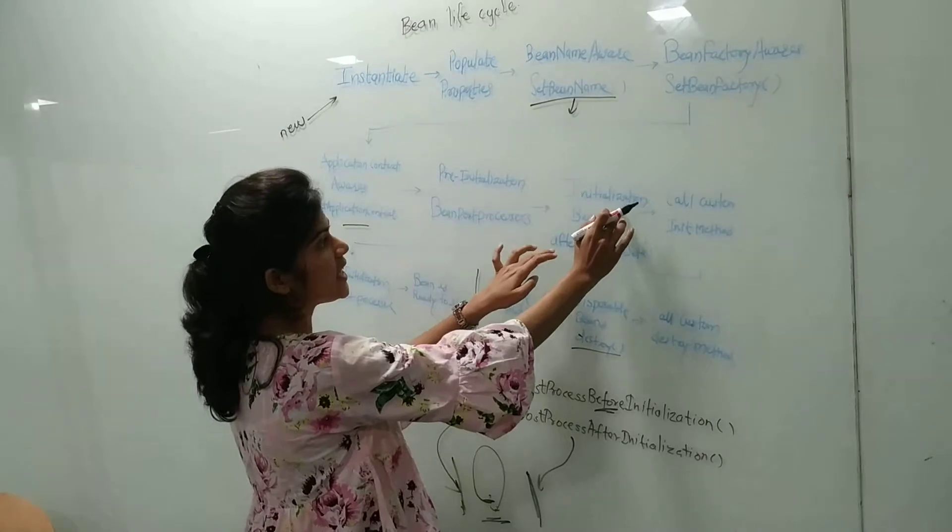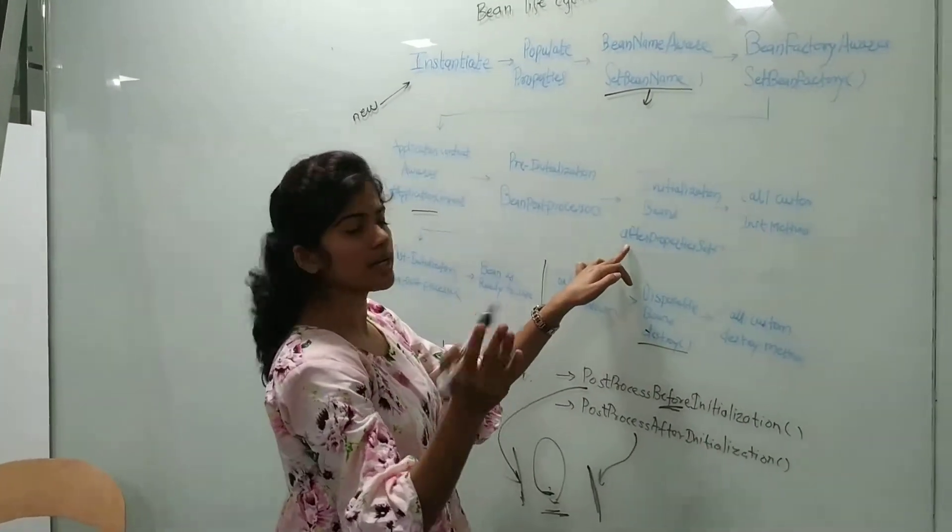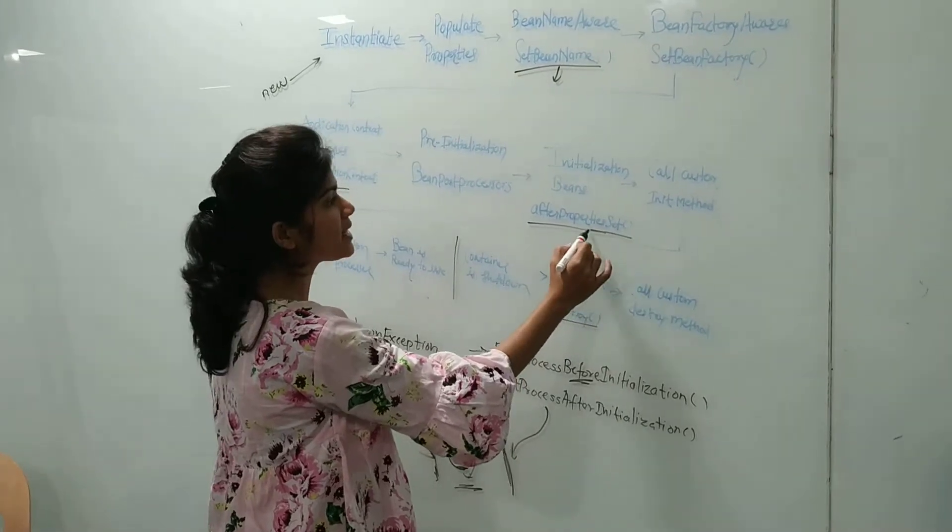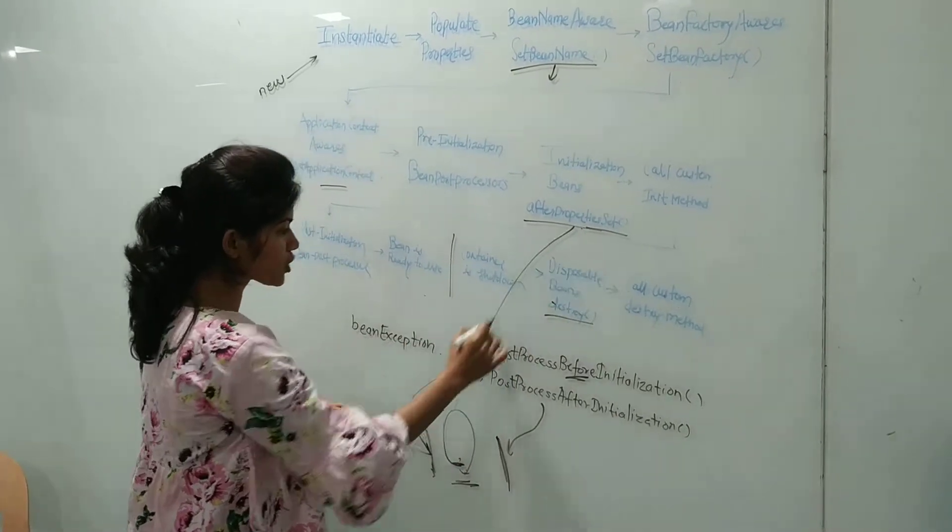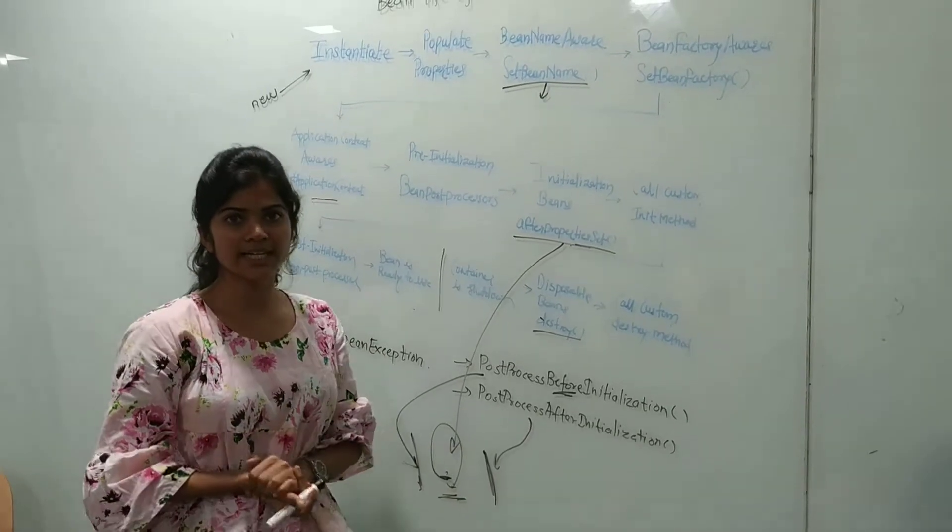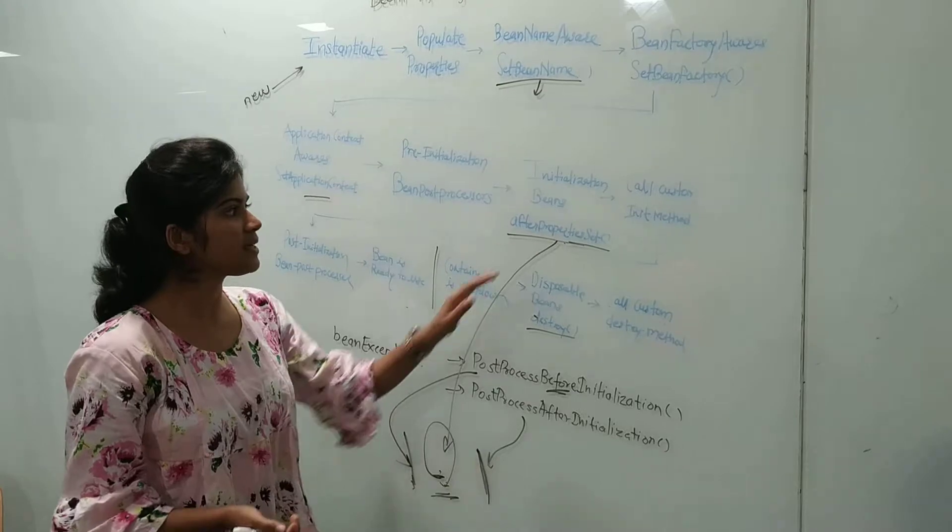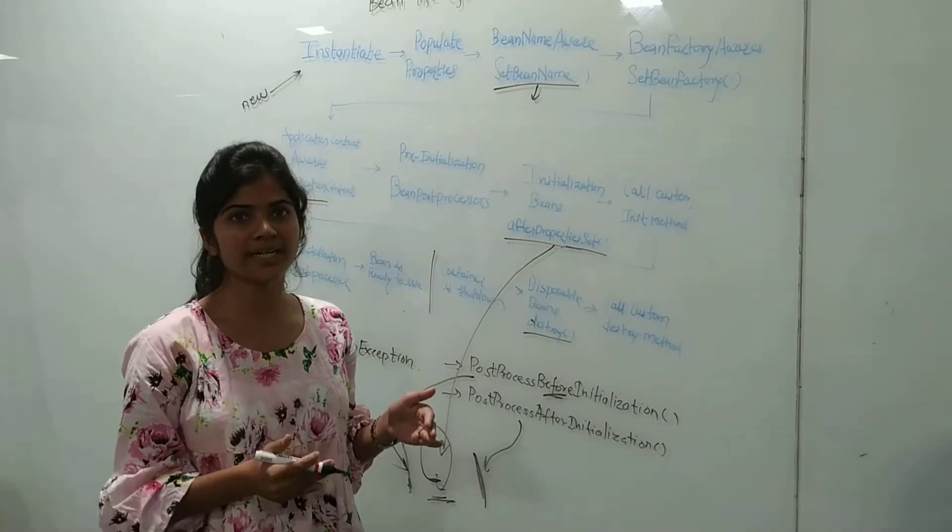InitializingBean is implemented when, after properties are set, we are getting the properties. InitializingBean is used to get the properties.